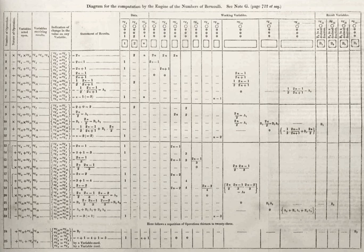One of the simplest algorithms is to find the largest number in a list of numbers in random order. Finding the solution requires looking at every number in the list. From this follows a simple algorithm, stated as a high-level description in English prose: If there are no numbers in the set then there is no highest number. Assume the first number in the set is the largest. For each remaining number in the set, if this number is larger than the current largest, consider it to be the largest. When there are no numbers left to iterate over, consider the current largest to be the largest number of the set.